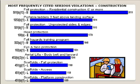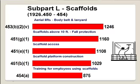Looking at the most frequently cited serious violations in the construction industry, most have to do with falls, ladder use, and scaffold categories — fall protection, access, and platform construction. For specific scaffold citations, we see citations for not having appropriate harness and lanyards, working above 10 feet without fall protection, inadequate access, poor platform construction, and lack of training for users.